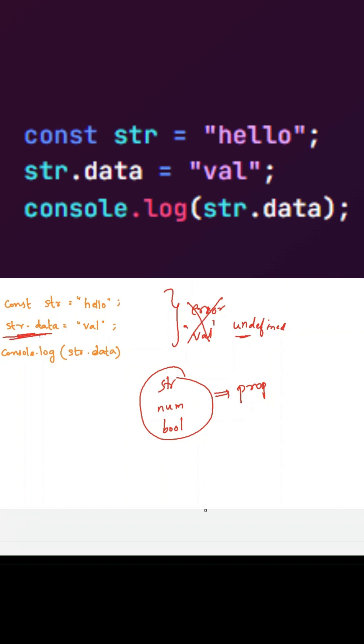Because in the second line, when you're trying to add the property 'data' to this string or any primitive data type, JavaScript will internally create a temporary object and store this property in that temporary object.